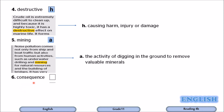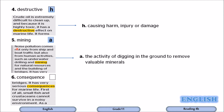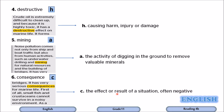Number six: consequence. The consequence of something — you remember the word result? Noise pollution from human activities such as underwater drilling and mining has very serious consequences for marine life. The first consequence is that small fish and crustaceans cannot survive in a noisy environment. It goes with C: the effect or result of a situation, often negative.